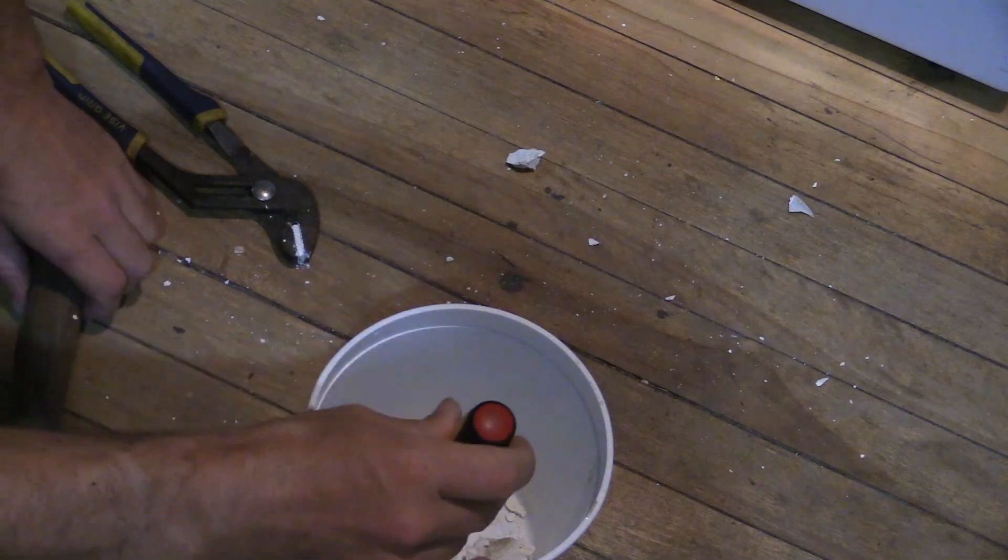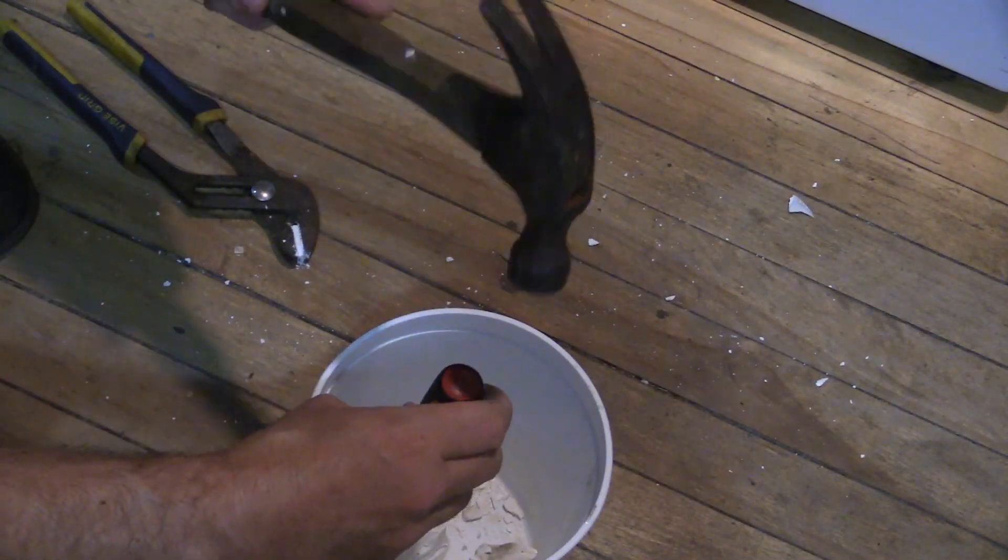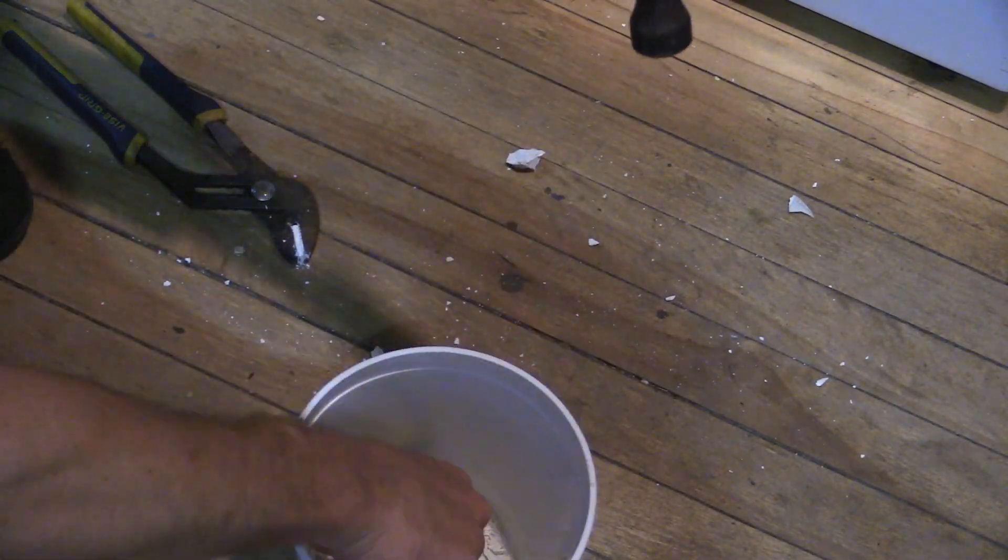Using a chisel or screwdriver and hammer break away the plaster and admire your metal casting.